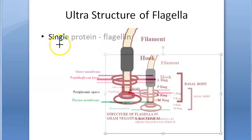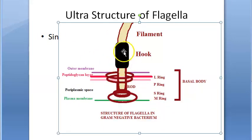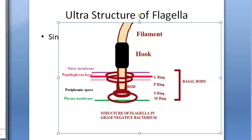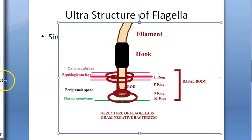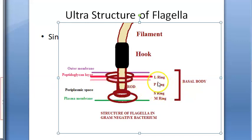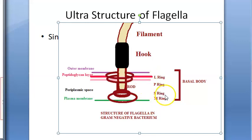The hook is a short curved flexible segment that links the filament to the basal body. The basal body is embedded in the cell and is the most complex part. It has two to four rings: L ring, P ring, S ring, and M ring. M is the membrane ring, L is associated with the lipopolysaccharide layer, and this region includes the periplasmic space.